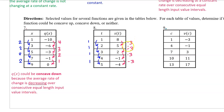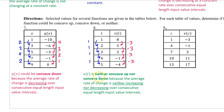For number 8, these are the output value changes and these are the input value changes. Again, we have consecutive equal-length input value intervals, so we don't need to actually calculate the average rate of change to see that it is constant. S(t) is neither concave up nor concave down because the average rate of change is neither increasing nor decreasing over consecutive equal-length input value intervals. S(t) is most likely linear.